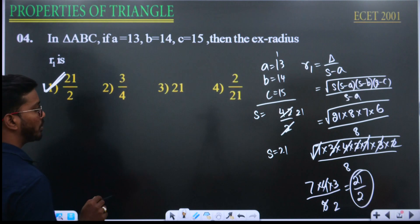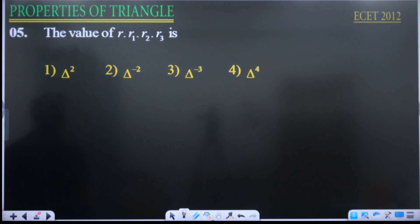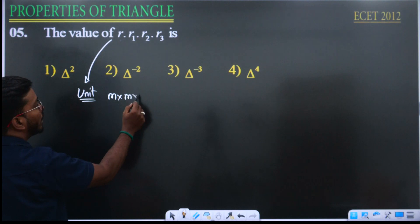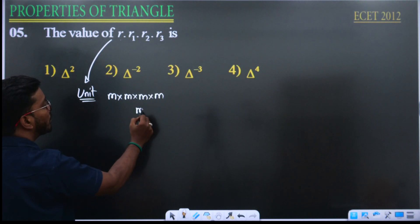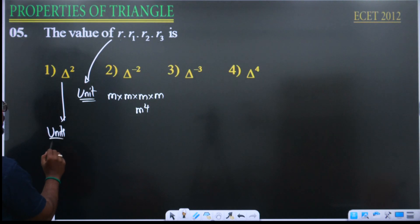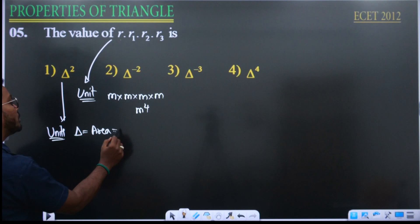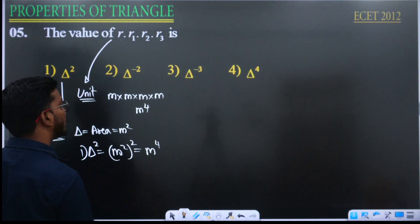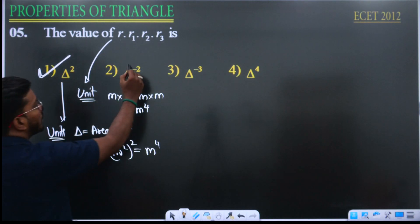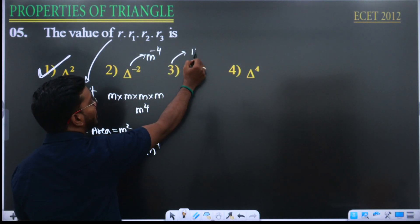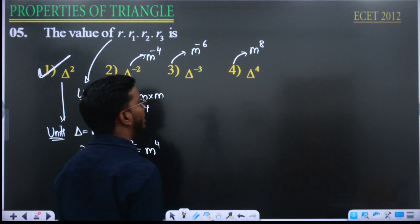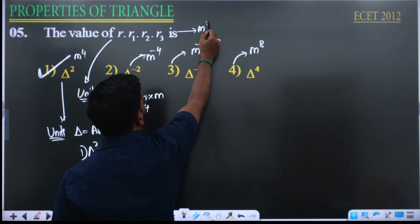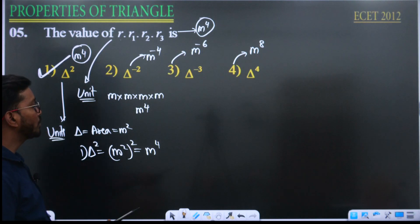Next question: find r times r1 times r2 times r3. We can solve this by unit method. r, r1, r2, r3 each have units of metres, so their product has units of metre to the power 4. Delta is area with units metre squared. Delta squared has units metre power 4. So option 1, delta squared, gives metre power 4, which matches. The correct answer is delta squared.